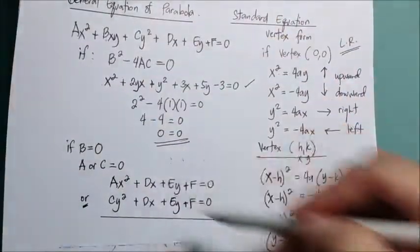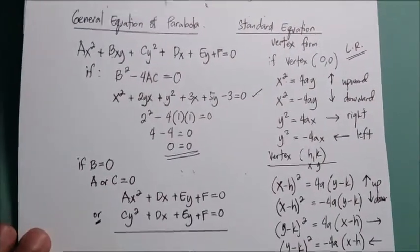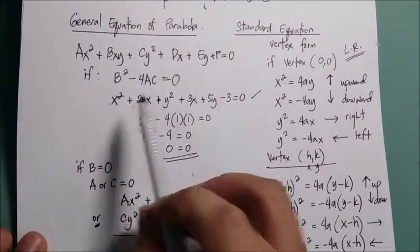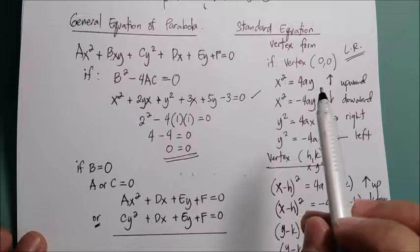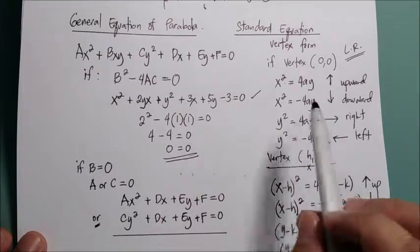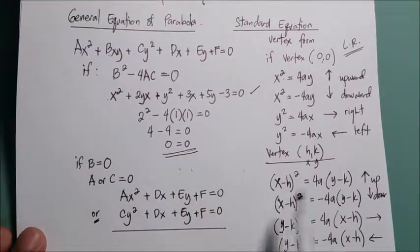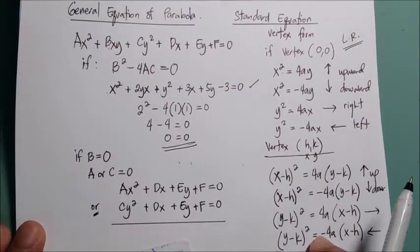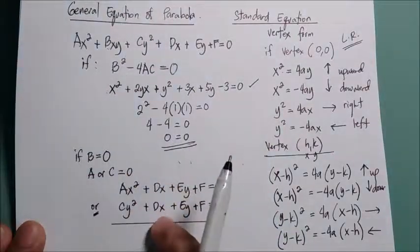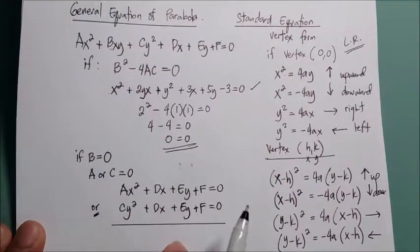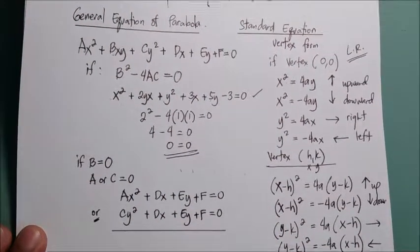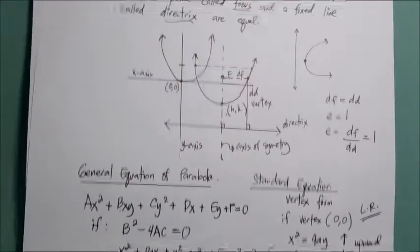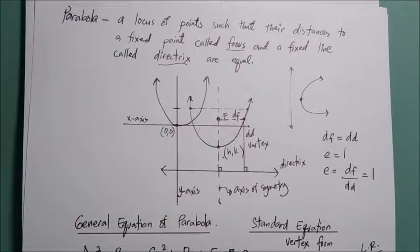To summarize: the general equation can be converted into standard form and vice versa. From the standard form you can find the vertex and elements directly, and from the general form you can find them by formula. We will discuss the elements of the parabola in more detail — please don't forget to subscribe. Thank you.